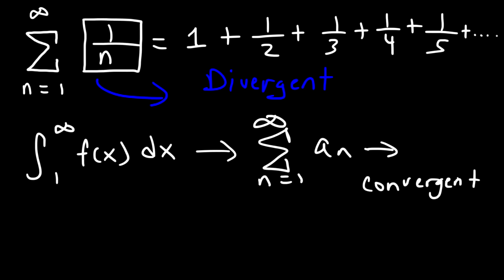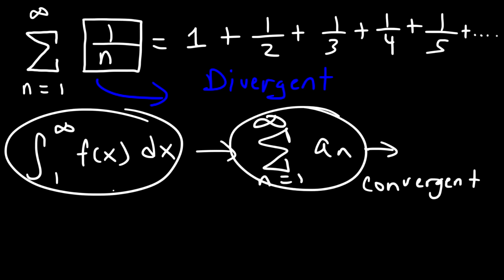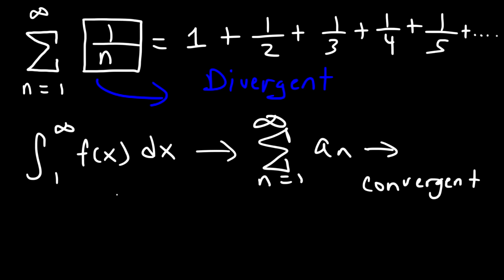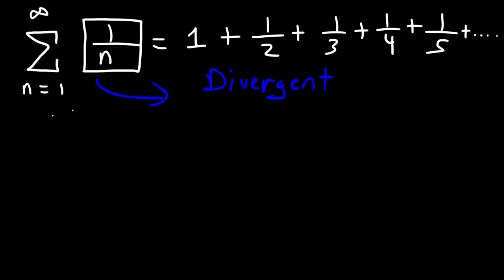Likewise, if the integral test fails, if it's divergent, then the series will be divergent. So the corresponding function for f of x is going to be 1 over x.